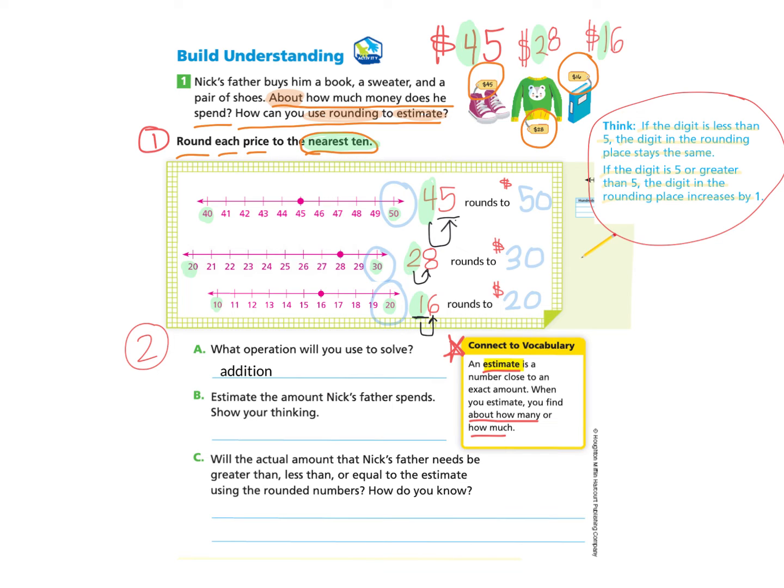Well, like we had discussed before, we are going to take each of these numbers and we are going to use addition to put them together to estimate what Nick's father spends. So we will write 50 plus 30 plus 20, which makes 100. And we can answer the question, Nick's father spends about $100.